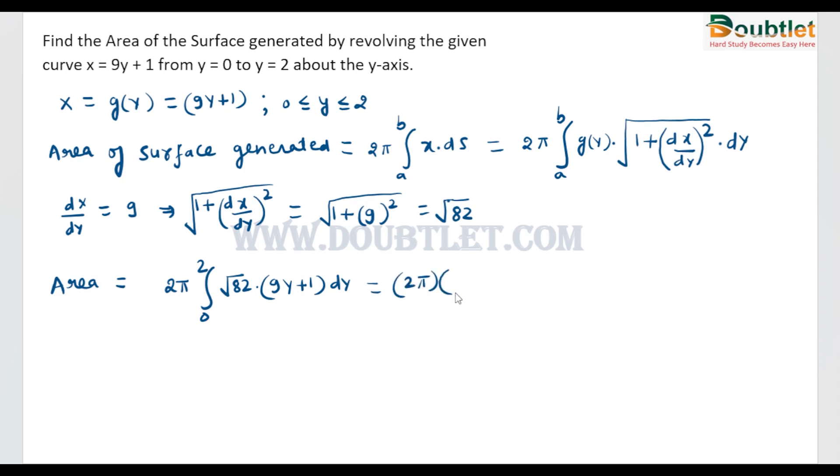Now this is a simple integral. Root 82 will come out from the bracket because it is a constant term, and this is a linear integral. So the integral will be 9y squared divided by 2 plus y. We have to put the limit from 0 to 2.